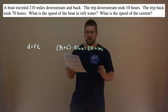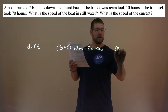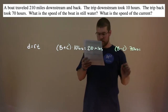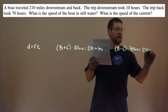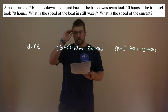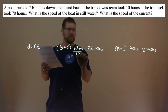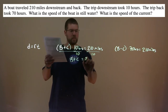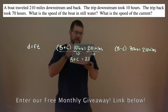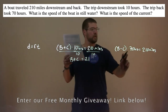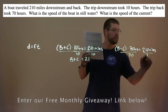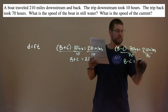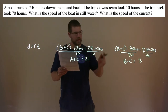The second equation: the trip back would be the speed of the boat minus the current, because they're going against the current, took 70 hours, and that's 210 miles. To simplify, divide both sides of the first equation by 10: B plus C equals 21. Divide the second equation by 70: B minus C equals 3.